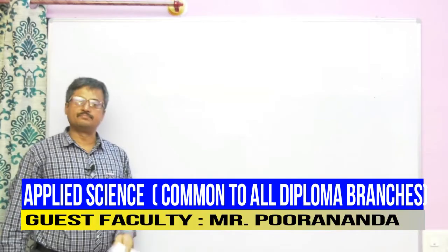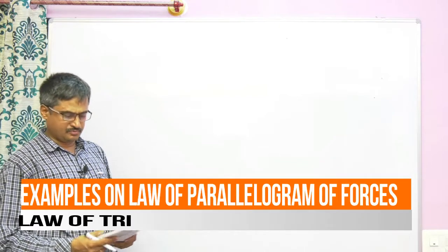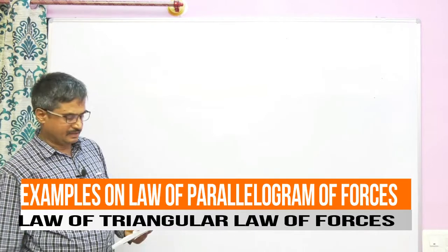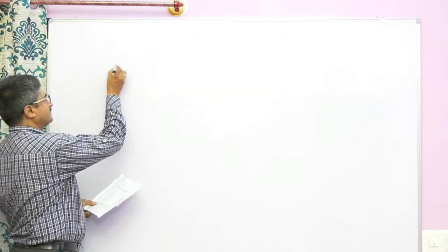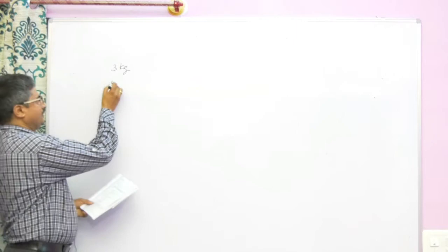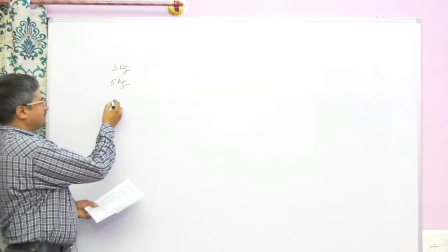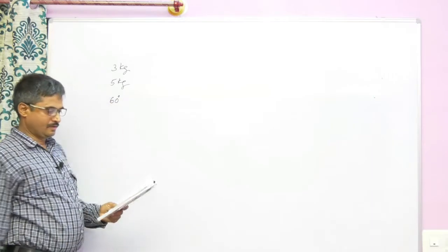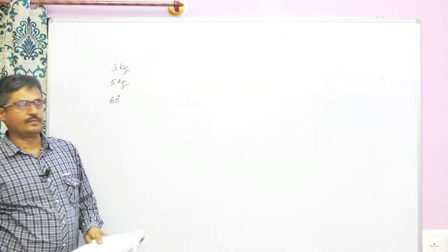Now let us consider some examples of law of parallelogram of forces and law of triangle of forces. The first one: two forces, 3 kg and 5 kg, act at a point making an angle of 60 degrees with each other. Find the magnitude of the resultant.